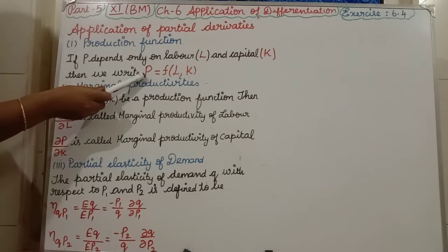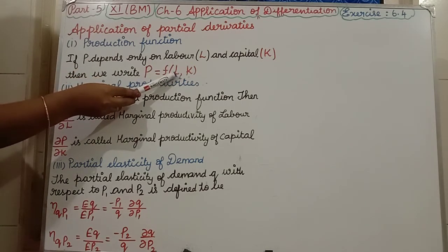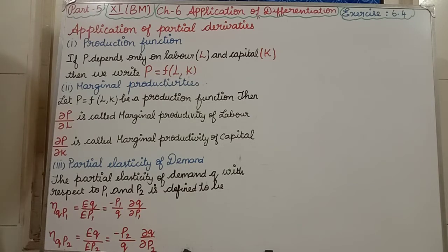P is equal to - P is nothing but production - is equal to function of labour. Labour means capital L. Capital means capital K.